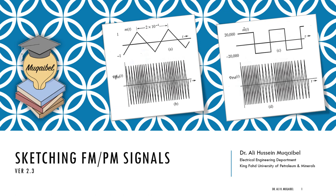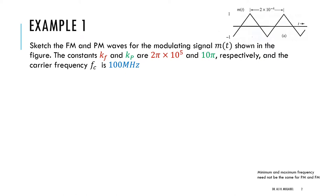Now let's together sketch some FM and PM examples — sketching FM and PM signals, or angle modulated signals. The example states: sketch the FM and PM waveforms for the modulating message m(t) shown in the diagram. The constants kf and kp are given — I'm using the color code here: red for kf and green for kp. These constants are given in the question, and the carrier frequency fc is 100 megahertz.